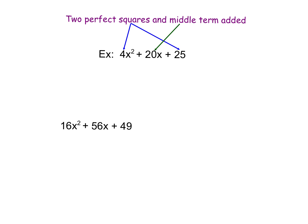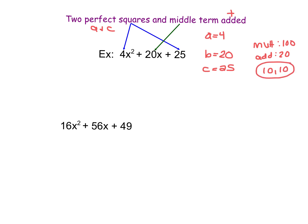On the screen you should see a trinomial. Identifying our A, B, and C values, we find that A is equal to 4, B is equal to 20, and C is equal to 25. We're going to focus on the case where we have two perfect squares for A and C and a positive middle term for B. I'm going to demonstrate this first by looking at the ABC method. Multiplying A times C gives us 4 times 25, which is 100. Then I need two numbers that multiply to 100 and add to 20. Thinking through the factors of 100, I notice that 10 plus 10 gives me 20 and 10 times 10 gives me 100.